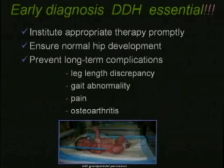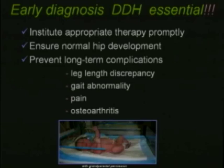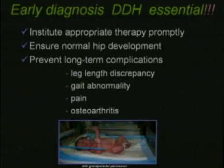The most important thing is to make the diagnosis of DDH early so that appropriate therapy can be instituted promptly to ensure normal development of the hip. The goal is to prevent long-term complications so babies don't end up, as many did before the days of ultrasound, with leg length discrepancy, gait abnormalities, pain, and osteoarthritis.